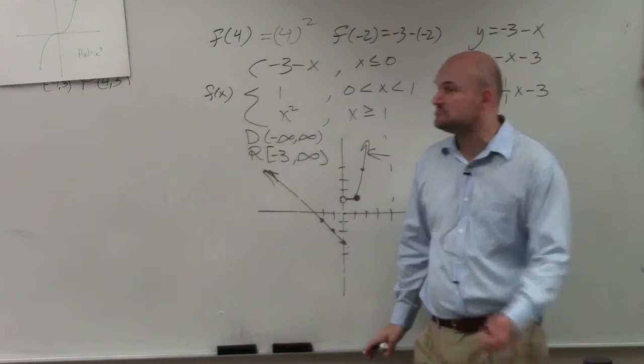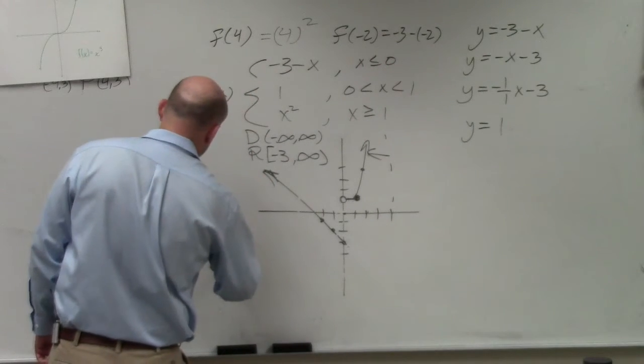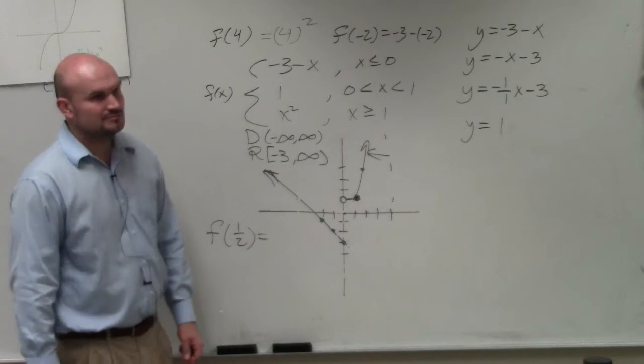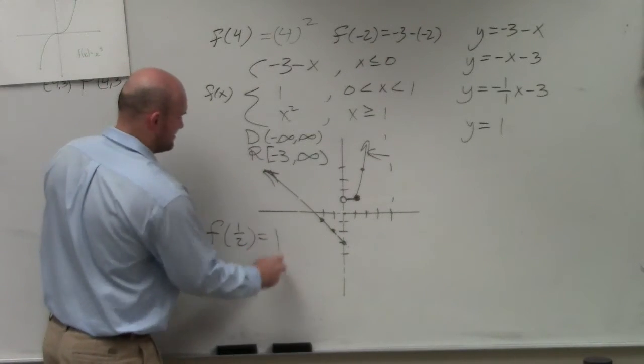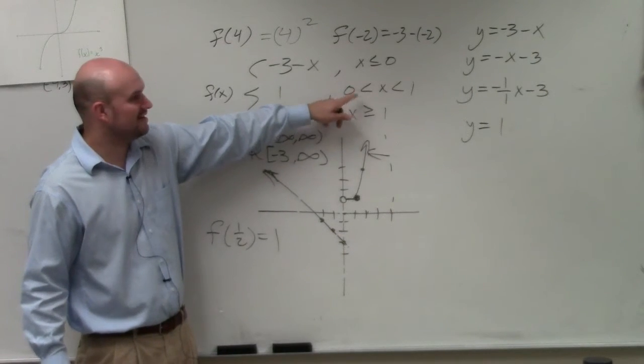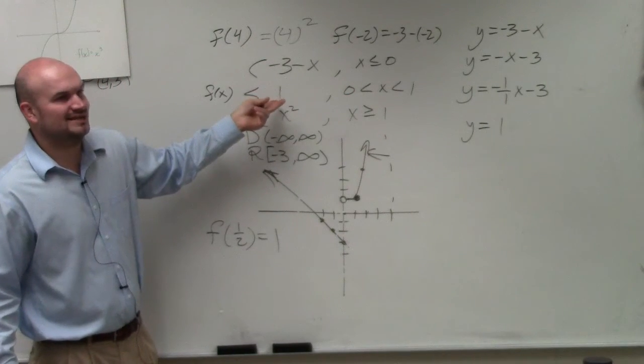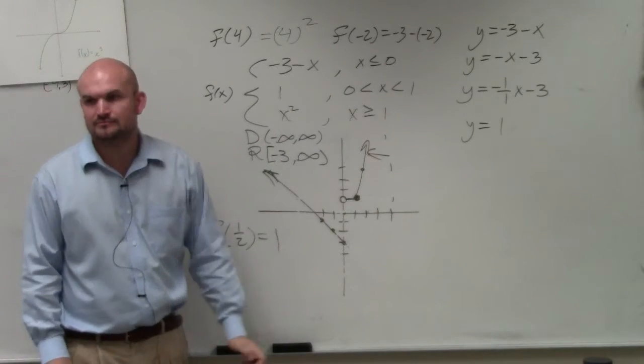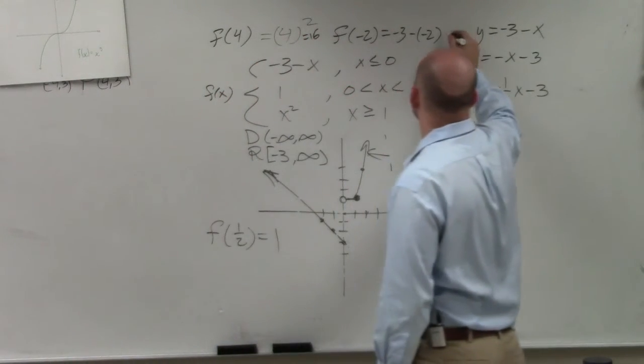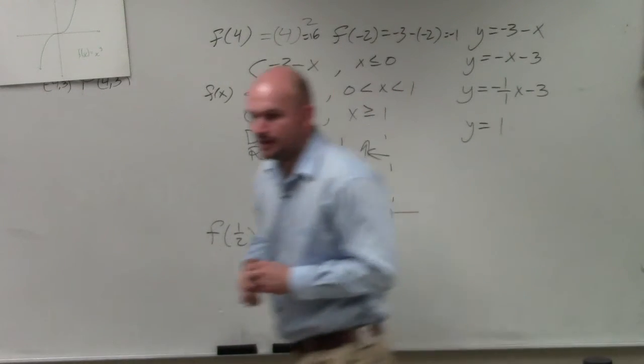And then, obviously, if I said, what's f of, hmm, let's say this. What's f of 1 half? Right. So what's the answer? 1. Because 1 half is between 0 and 1. Right? Well, you can't plug in anything in for 1. The answer is just 1. Right? Where that's that? There we go.